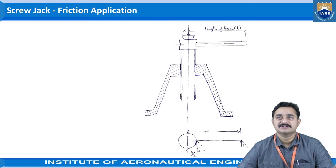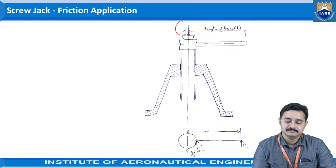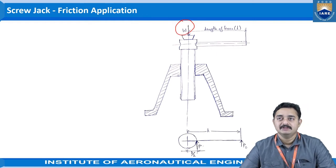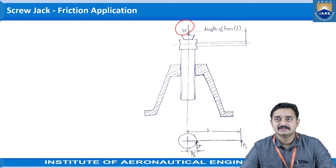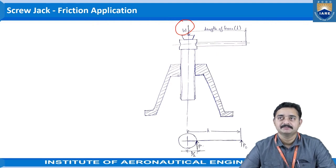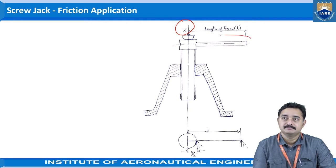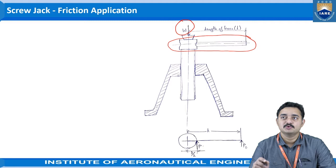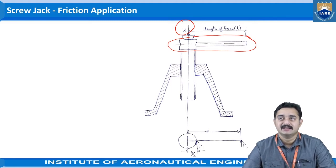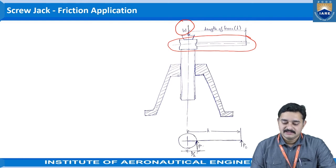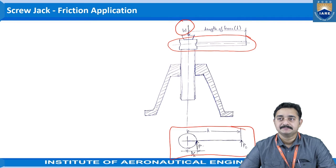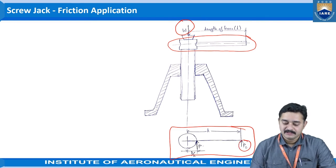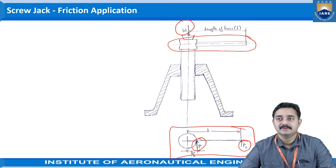This is the screw jack — a cross section of the screw jack — where W is the load being applied onto the screw jack. This is the shaft which we use to apply the force, and the length of the shaft is denoted with the letter L. This is the top view of the screw jack where P1 and P are the efforts being applied onto the shaft.